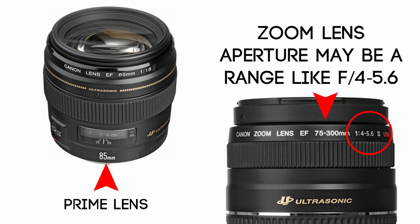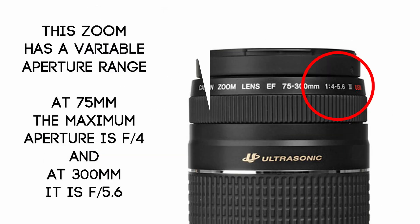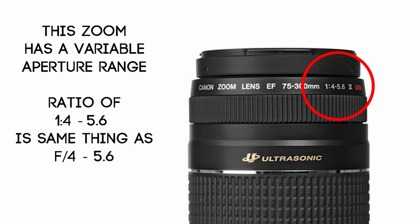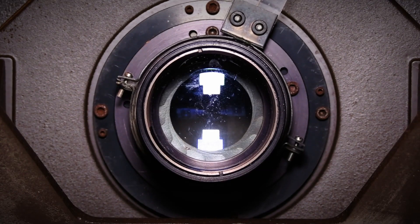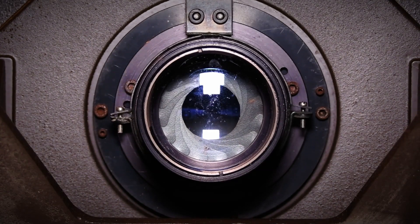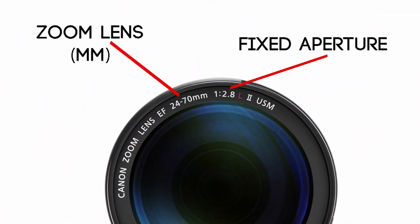If the lens is a zoom with a range of focal lengths, like 18-55mm, then it usually also has a range of apertures, such as F4 to F5.6. This is a variable aperture, and it tells you the maximum apertures at the shortest and longest focal lengths. These numbers may appear with the F, without the F, or as a ratio. With a variable aperture, the more you zoom, the narrower the aperture becomes. There are some zoom lenses that have fixed apertures, but these will be more expensive.